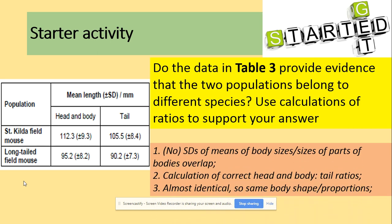The standard deviations of the means of body length overlap. If the standard deviations overlap, as you can see here, the calculations suggest there is not a significant difference. Once you calculate the head-and-body-to-tail ratio, you will see the ratio is similar as well. So these species have the same body shape proportions — there is no significant difference.